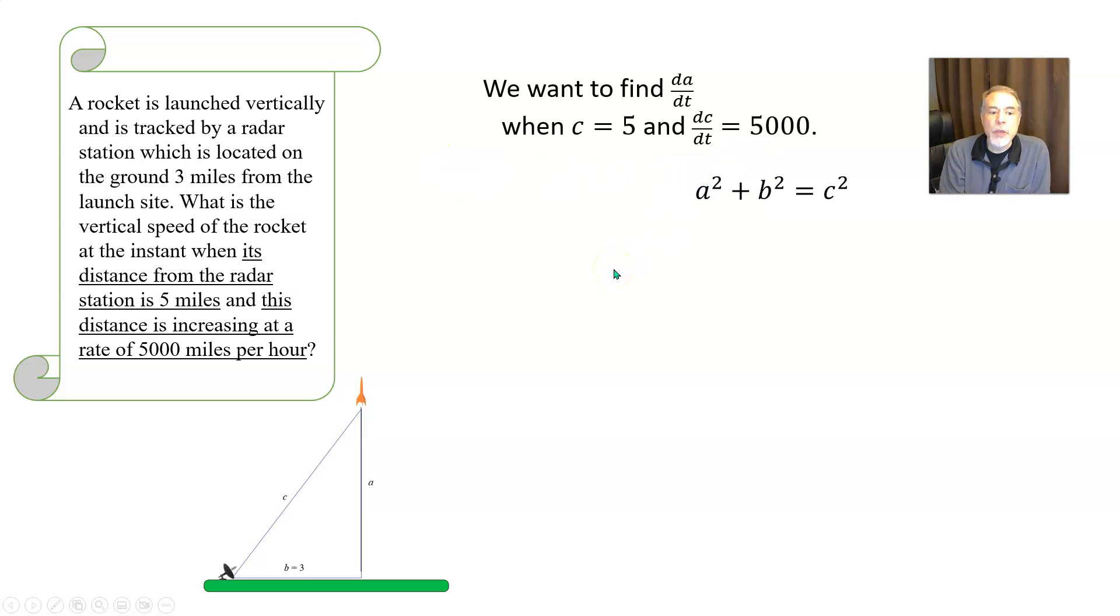Now, like I said, we can use the Pythagorean theorem to come up with an equation relating these things to one another. So a squared plus b squared equals c squared. And since b is not changing, it's just a constant three miles. I can go ahead and put that number three in there. So it's a squared plus three squared, or nine, that's equal to c squared.